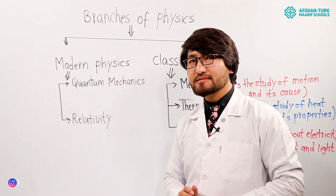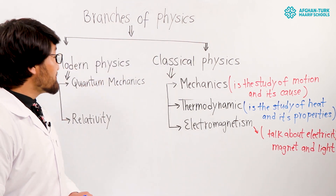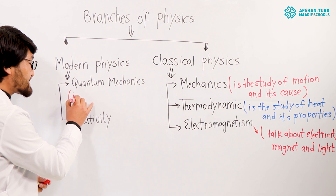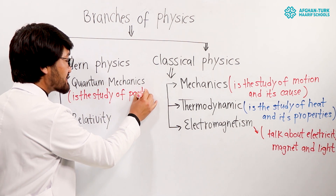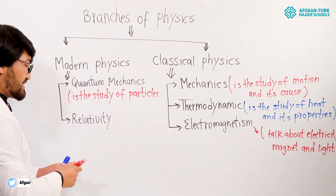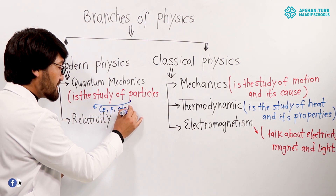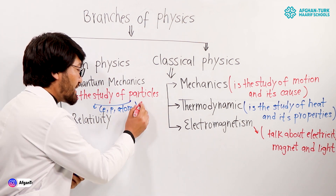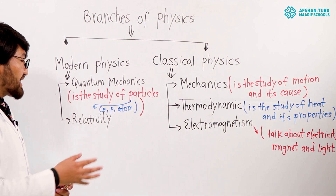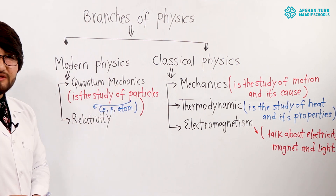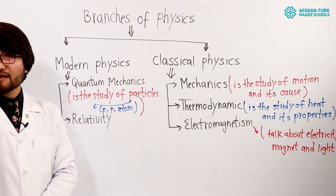What is quantum mechanics? Quantum mechanics is the study of particles. Do you know particles? Electron, proton, atom — these are particles. Quantum mechanics is the study of particles: electron, proton, atom, or neutron. When we want to know the properties of electrons, the speed of electrons, protons, or atoms, we study quantum mechanics.